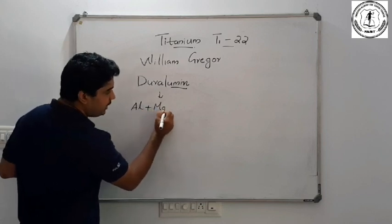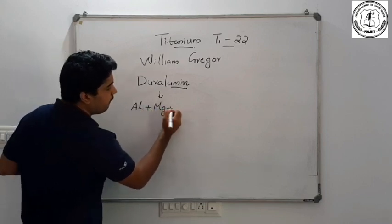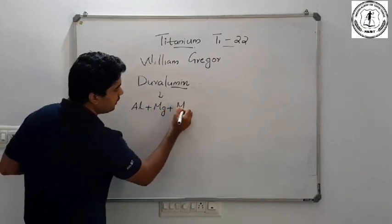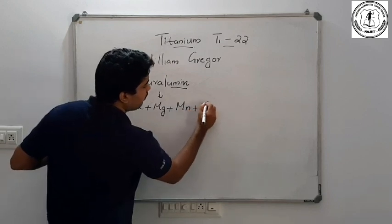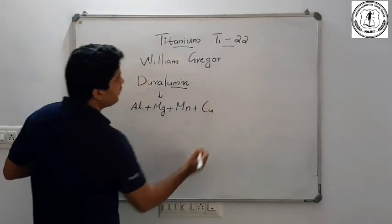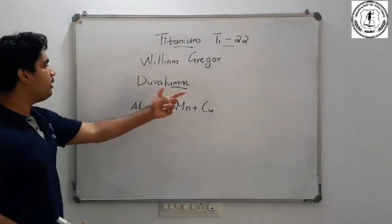Duralumin is made of Aluminium, Magnesium, and Copper.